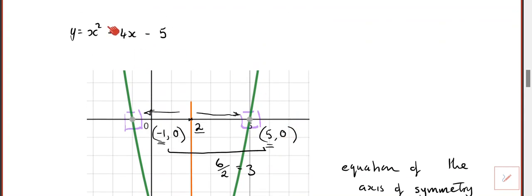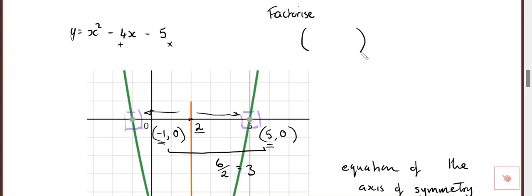What I'm going to get you to do now is factorise this case. This has only got one x squared, so it should be two numbers that multiply to make negative five, which means the brackets must have x plus and x minus.